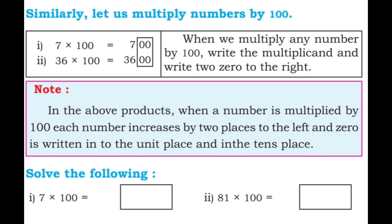When we multiply any number by 100, write the multiplicand and write two zeros to the right. For example, 7 into 100: 7 ones are 7, append two zeros, so 700. 81 into 100: 81 into 1 is 81, append two zeros, so 8100. When a number is multiplied by 100, each digit increases by 2 places to the left, and zeros are written in the units and tens place.